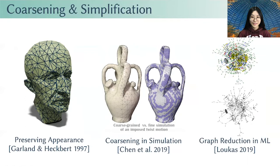Coarsening has become an extensively studied topic in computer graphics with the aim of preserving different geometric and physical properties under decimation. For example, in geometry processing, we are interested in simplifying a shape to preserve its appearance, and in physics-based simulation, we can homogenize a shape while capturing its physical properties. Coarsening is also popular in machine learning, where people study graph reduction while preserving spectral properties.